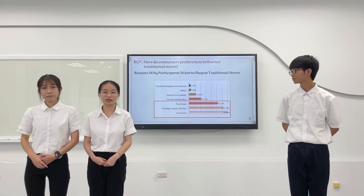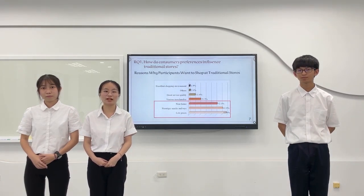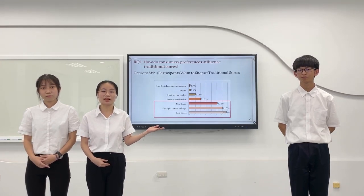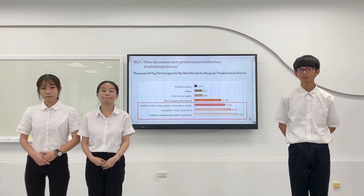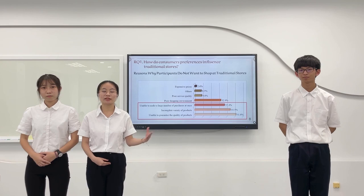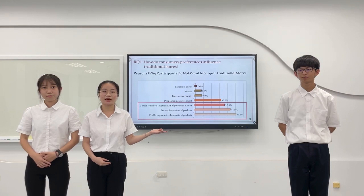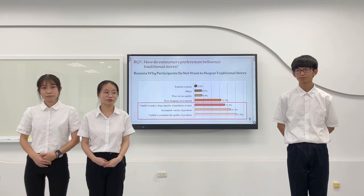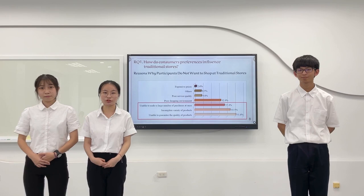Let's talk about findings and discussion. The survey shows reasons why participants would want to shop at a traditional store. The top reasons are low prices, selling everyday goods, and being near home. The survey also shows reasons why participants would not want to shop at a traditional store. The top reasons are low guaranteed product quality, incomplete variety of products, and inability to handle large purchases efficiently. Participants' preferences are related to the type of goods, price, and location.